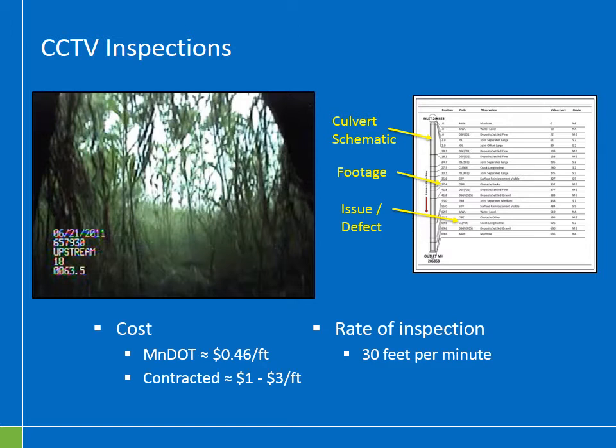For planning purposes, you can assume CCTV inspections are conducted at a rate of about 30 feet per minute. Thirty feet per minute is a best practice for the minimum speed one should travel through a culvert. So if you have several thousand feet of pipe to inspect, divide that by 30 feet per minute to get a good idea of the amount of time the inspector should be spending inside those pipes.